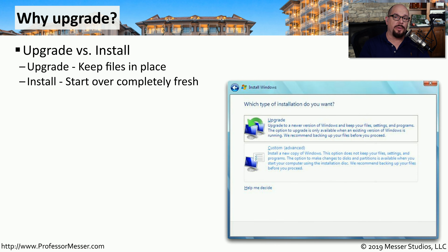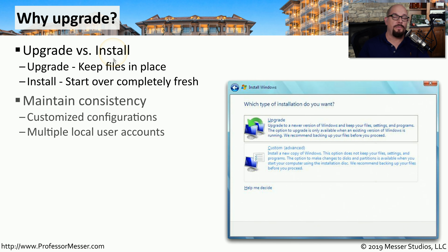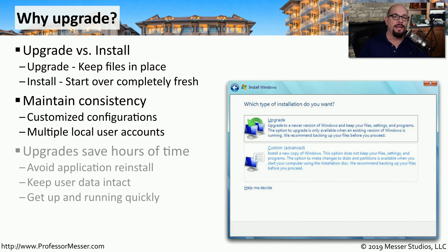Just because you're moving from one Windows version to another doesn't mean that your applications will be compatible across both of those different versions of Windows. If there's an existing version of Windows on this drive and you're moving to a new version, you may be able to perform an upgrade. The upgrade will keep all of your files in place and simply install the new version of Windows on top of it. If an upgrade path is not available, you'll have to delete everything on the drive and install a new version of Windows from scratch. If you are upgrading, you'll be able to keep all of the configurations on that system today, and if there are any local user accounts, all of those user accounts will be available once the system is upgraded.